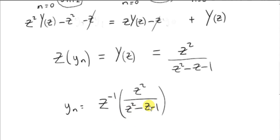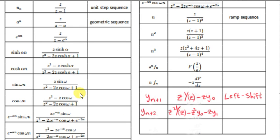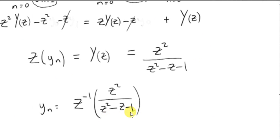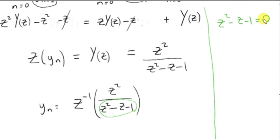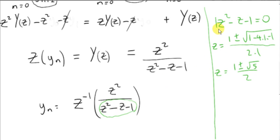We will factorize the denominator because we are going to use our table. Our table involves quantities like z over z minus a, so if we can get linear factors in the denominator, we may be able to use the geometric sequence or the ramp sequence. You can't factorize z squared minus z minus 1 in the usual way since the roots are not integers, so we solve the quadratic equation z squared minus z minus 1 equals 0. With a equals 1, b equals minus 1, c equals minus 1, the discriminant b squared minus 4ac gives 1 plus 4 which is 5, and here are our two roots.